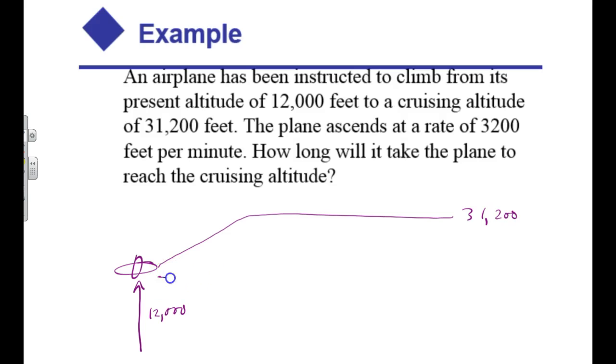He's going to go up and then cruise at 31,200 feet. Excuse me. So to find out the difference here, he's already at 12,000. So he's got a rise, a total distance here of 19,200 feet, which is the difference.